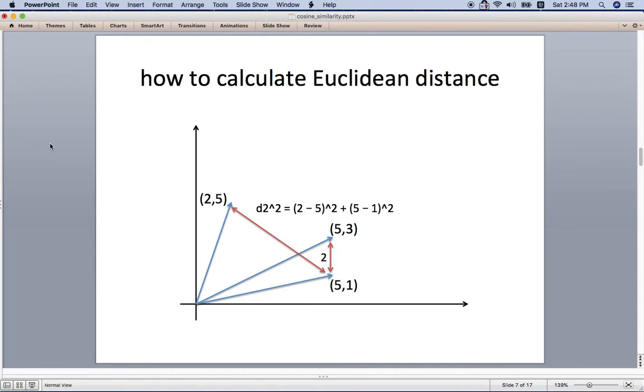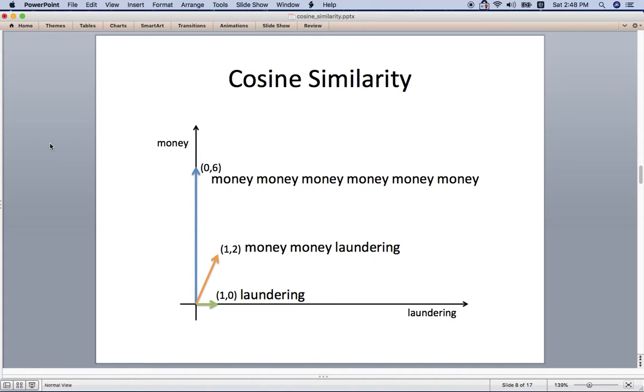We can easily get the distance by using this equation. Now let's talk about the cosine similarity. We have three examples here, and this vertical axis is the number of the money and this horizontal axis is the number of laundering. So if you have just laundering it will be (1,0), and money money laundering is (1,2), and we have bunch of money here which is (0,6).